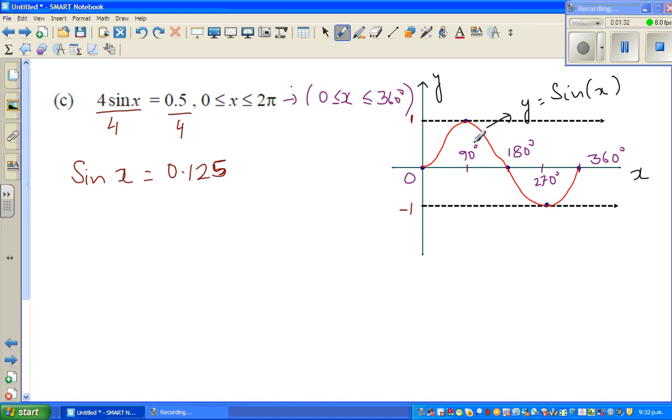This is 1 and this is negative 1. Sine of x has an amplitude of 1—the maximum is 1, minimum is minus 1. This is your maximum, this is your minimum, and this is your baseline.